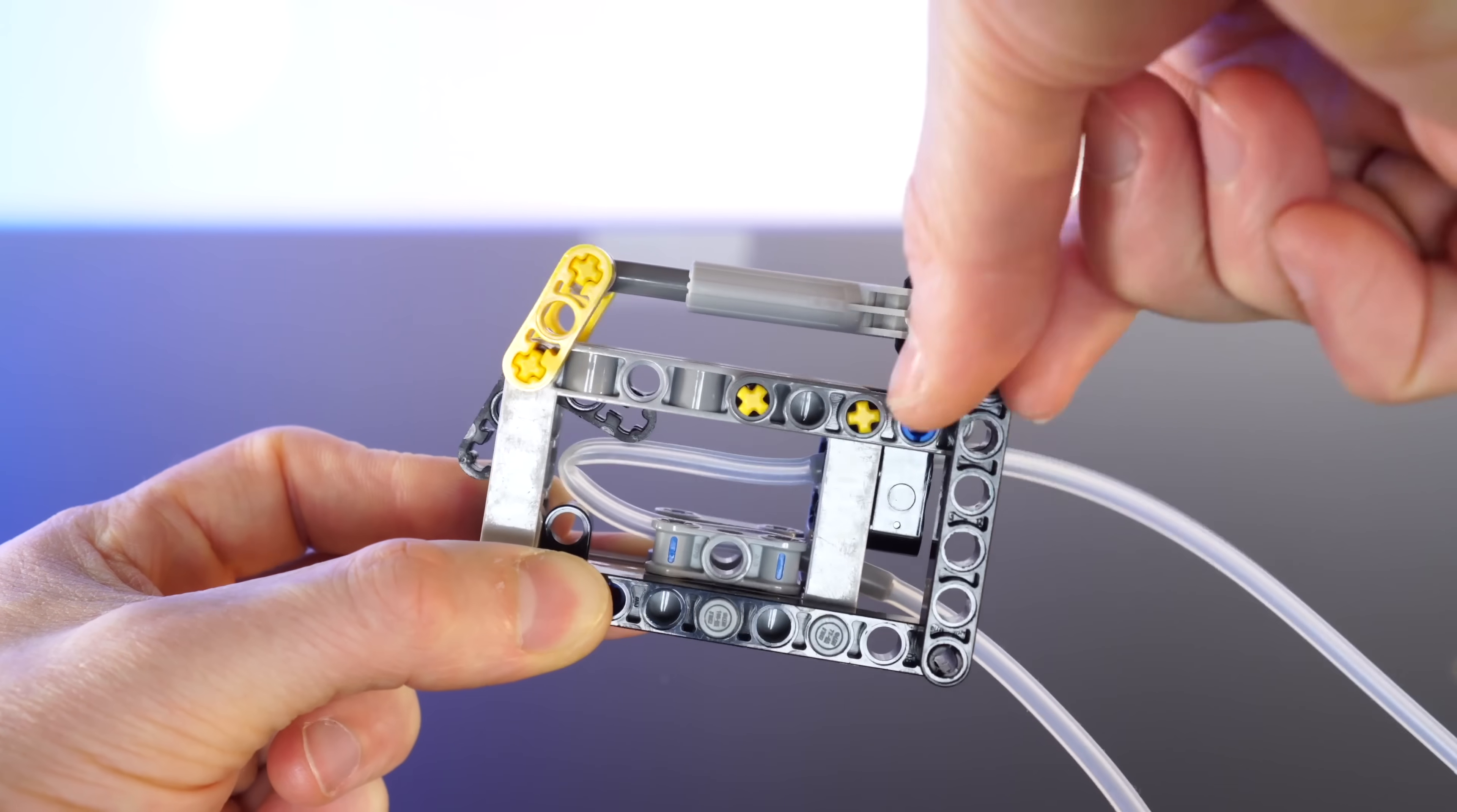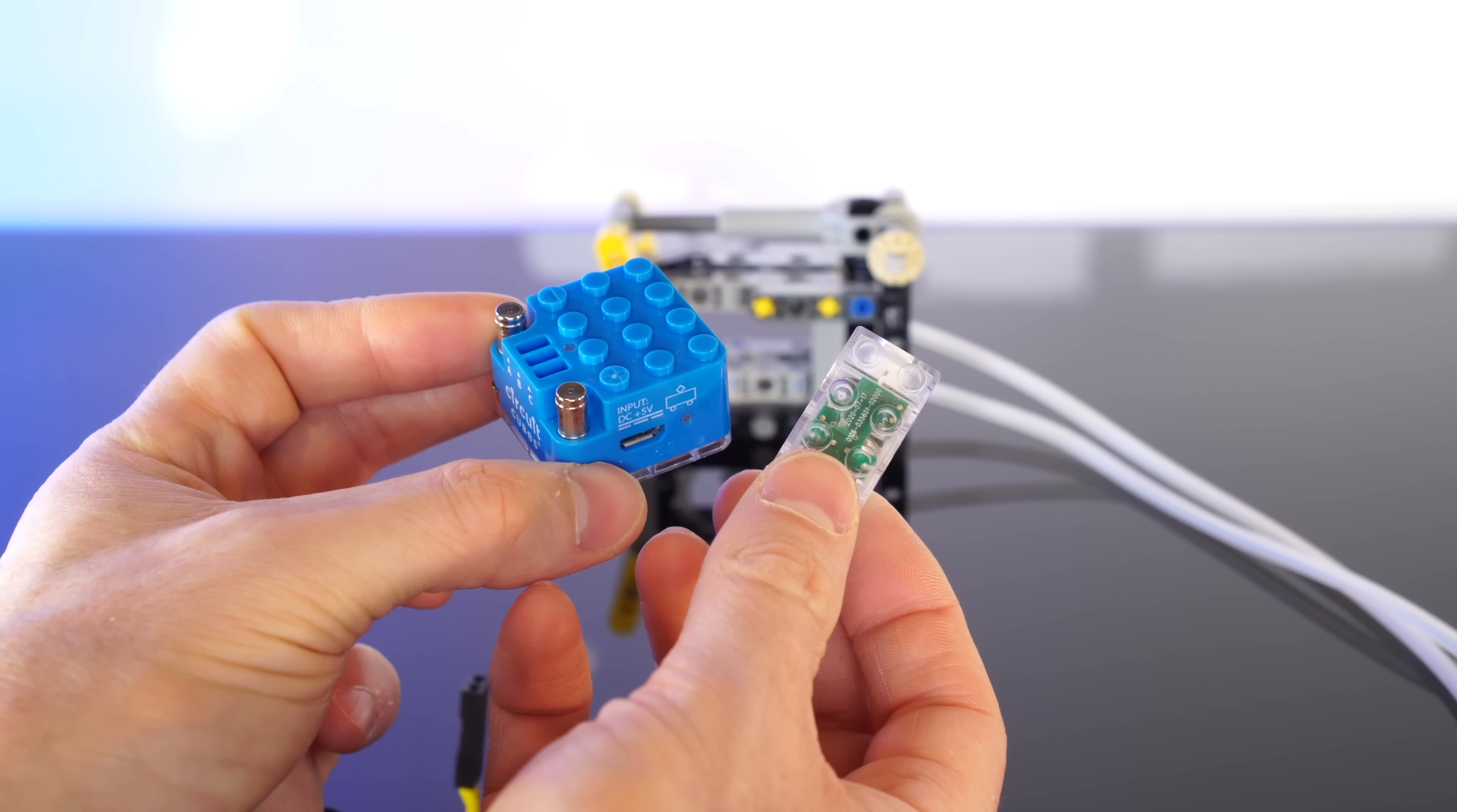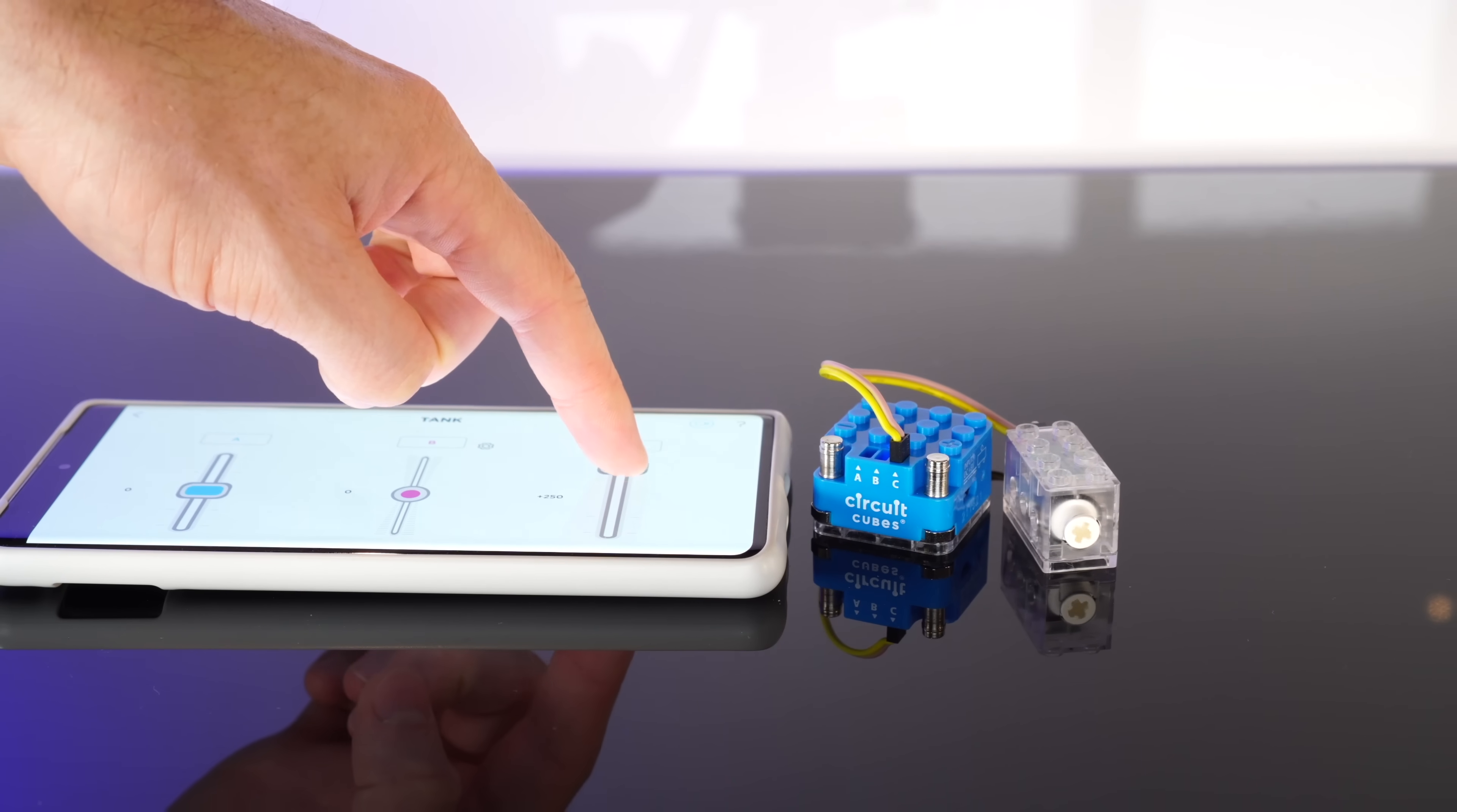Now, this vehicle needs to be light, so to motorize this mechanism, I'm going to use these tiny motors from CircuitCubes. I'm not sponsored, by the way, I just really like these little things. Now, this tiny Bluetooth battery unit allows us to control the motors from a phone. Pretty nifty little things.